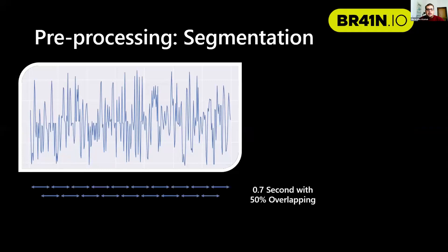After that, we made a segmentation of the data. We take 0.7 second segments with 50% overlap. Usually, P300 is 0.3 seconds, but when using patients, P300 might be delayed for 100 or more milliseconds.